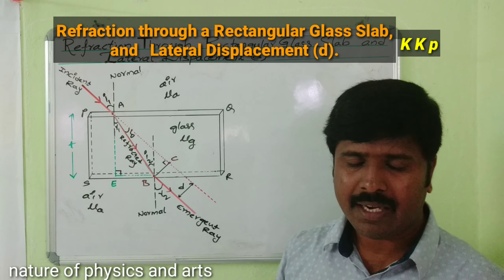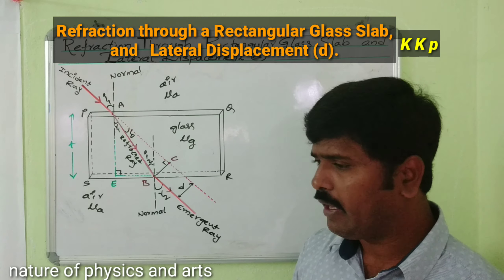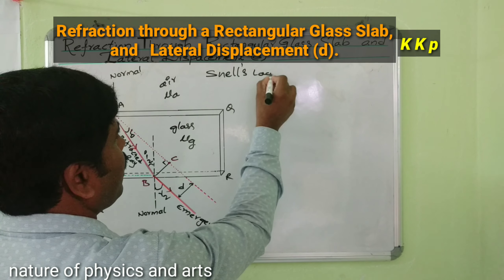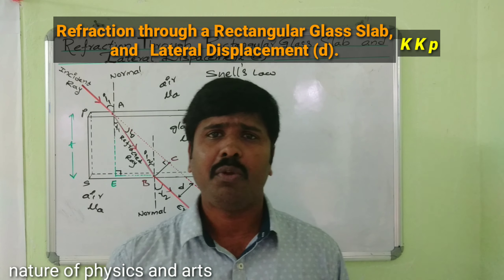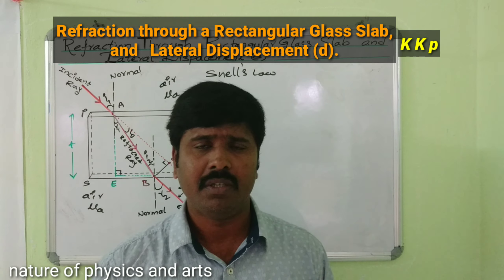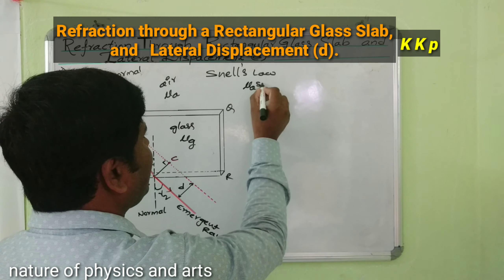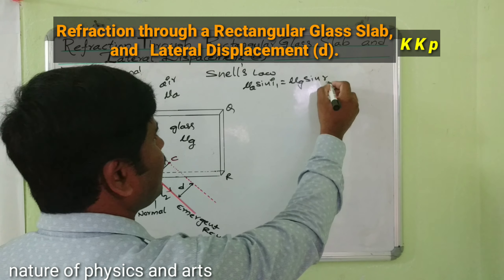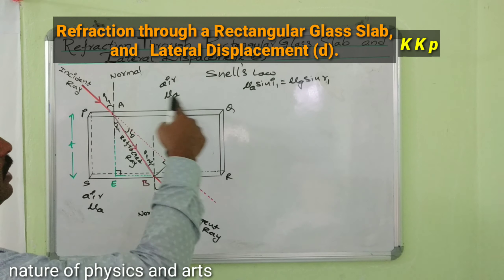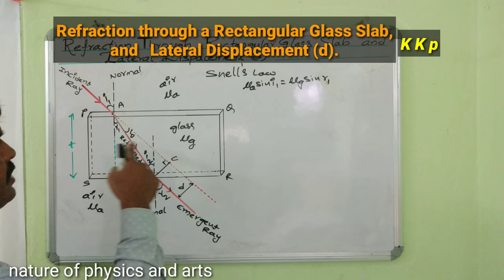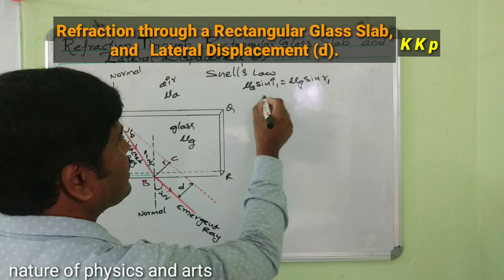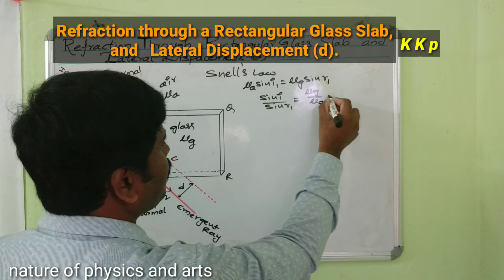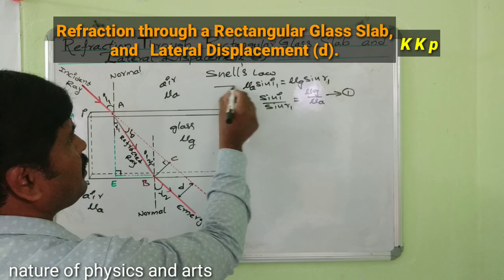Now we are considering Snell's law from air to glass, and also applying Snell's law from glass to air. Snell's law states that the product of refractive index and sine of the angle remains constant. So: mu_A · sin(i1) = mu_G · sin(r1). Rearranging: sin(i1) / sin(r1) = mu_G / mu_A. This is equation 1.